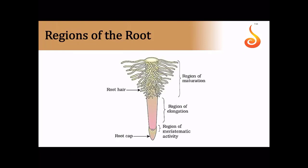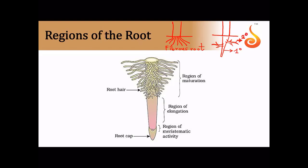In one type of root system, the main axis dies out and several bundles of roots develop from the base of the stem — this is the fibrous root. In another type, there is good organization: the mother axis or main axis develops from the radicle, remaining intact, with secondary and tertiary branches emerging. This organization — primary root, secondary root, and tertiary root — is called the tap root system.